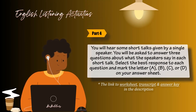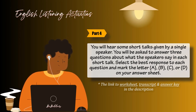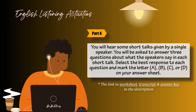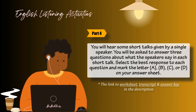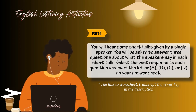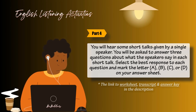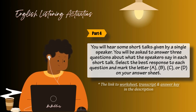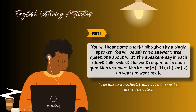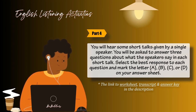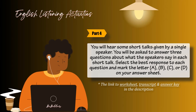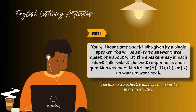Part 4. Directions: You will hear some short talks given by a single speaker. You will be asked to answer three questions about what the speaker says in each short talk. Select the best response to each question and mark the letter A, B, C, or D on your answer sheet. The talks will be spoken only one time and will not be printed in your test book. Now let us begin Part 4 with Question Number 71.